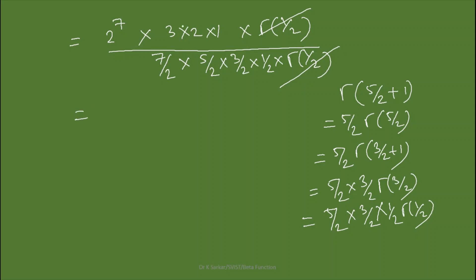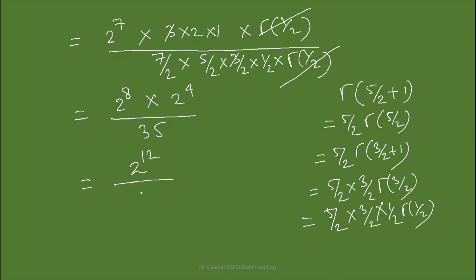After cancellation, in the numerator we have 2⁷ · 3! · 1 = 2⁷ · 6, and combining powers of 2 from the denominator factors (2⁴ from the four factors of 1/2), we get 2⁸ in the numerator divided by 2⁴, giving 2¹² / (7·5·3·1). Simplifying, 7 × 5 = 35, so the answer is 2¹² / 35. This is the required answer.